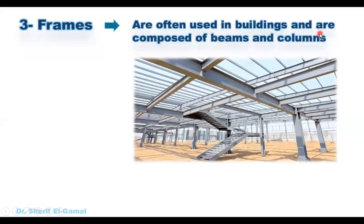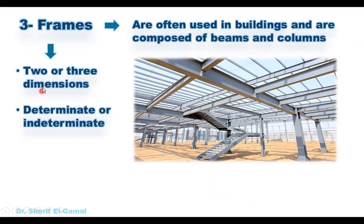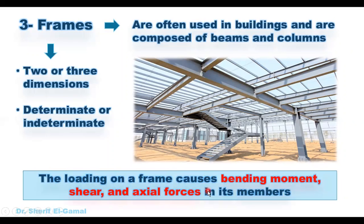The third famous type of structures are frames. Frames are often used in buildings and are composed of beams and columns. These frames could be two or three dimensions, and could be determinate or indeterminate. A determinate structure can be analyzed using the three equilibrium equations. However, for indeterminate structures, the number of unknowns is greater than the number of equations, and we have to use special methods to analyze them and get reactions, then draw shear and moment diagrams. The loading on a frame causes bending moment, shear, and axial forces in the frame members.